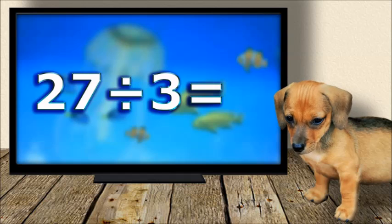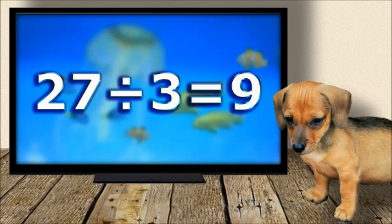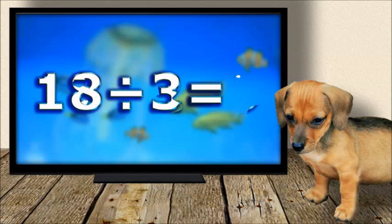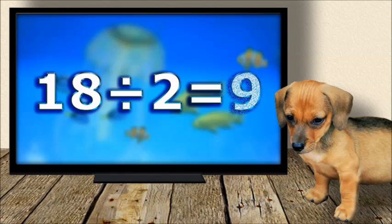Twenty-seven divided by three equals nine. Eighteen divided by two equals nine.